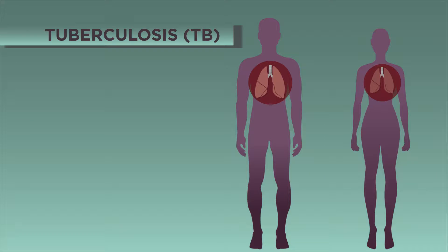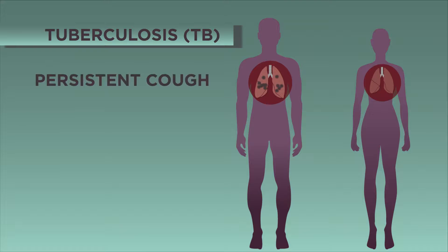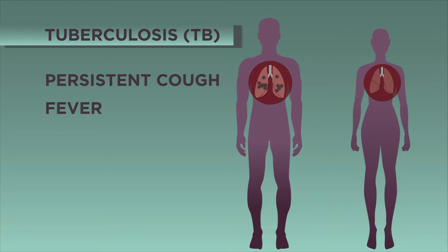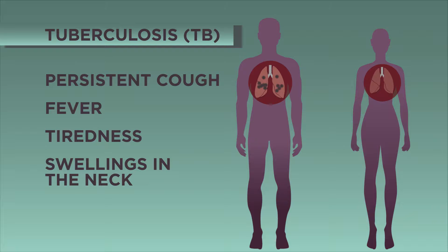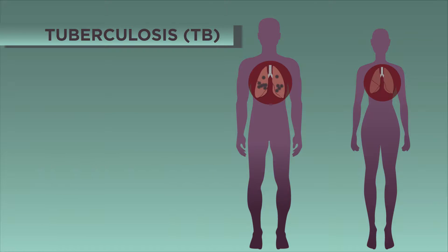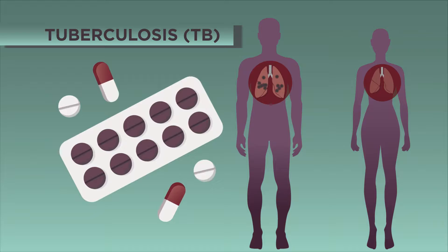TB is spread by breathing in tiny droplets from the coughs or sneezes of an infected person or animal. Symptoms of TB include a persistent cough which may bring up blood, fever, tiredness and swellings in the neck.